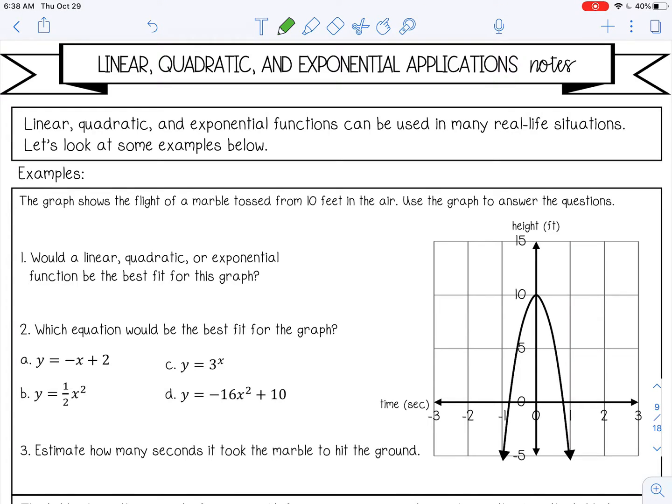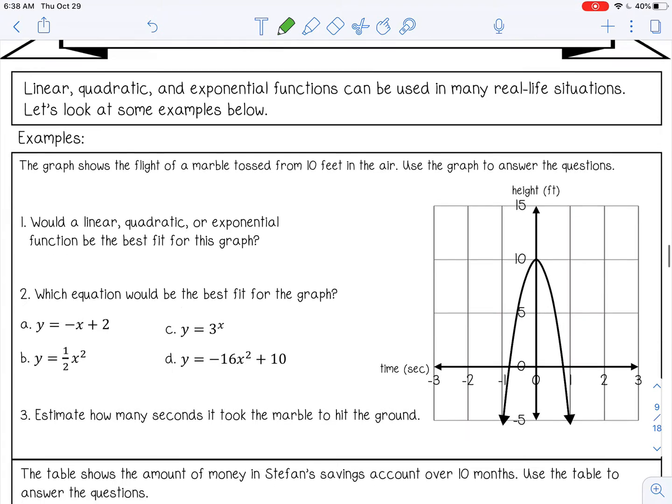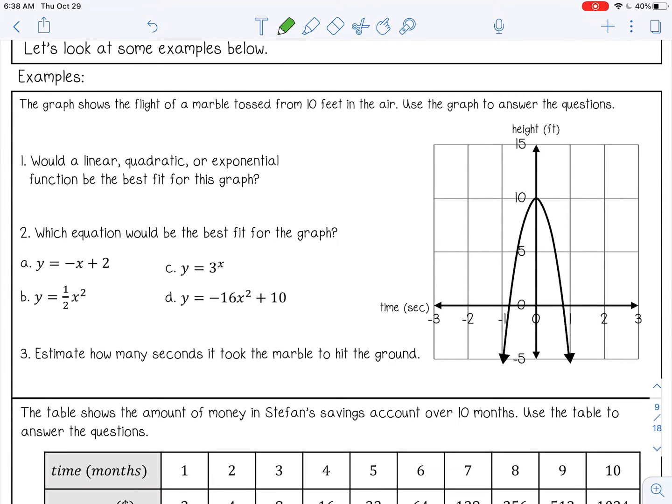The first example says the graph shows the flight of a marble tossed from 10 feet in the air. Use the graph to answer the questions. So number one, would a linear, quadratic, or exponential function be best fit for this graph? Well, that is a parabola, so it's definitely going to be quadratic.